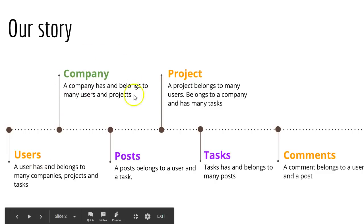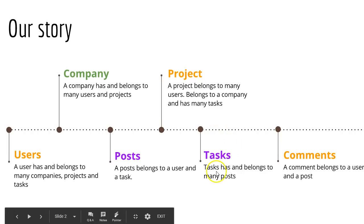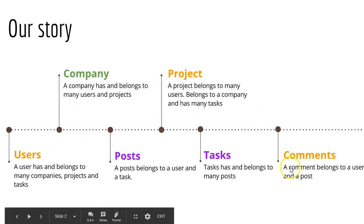The way it works is that the user will log in, create an account, and sign in. A company will have many projects and many users. A project will also have many users and many tasks. Under each task you can make a post, and inside each post you can make a comment. You can also make a comment on a task, a project, a user, and a company — so basically a comment will work for all the other entities.